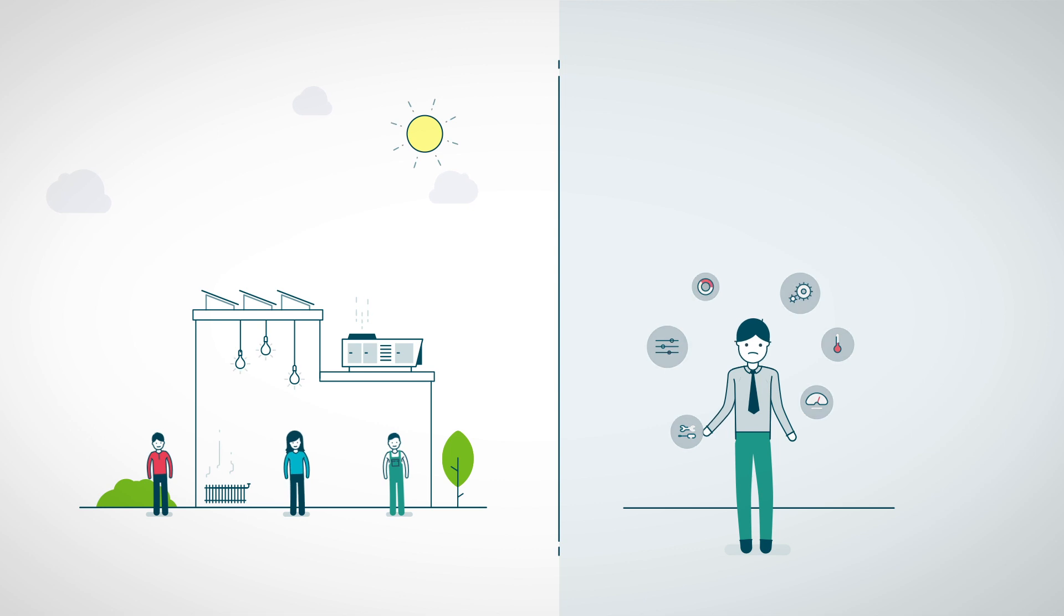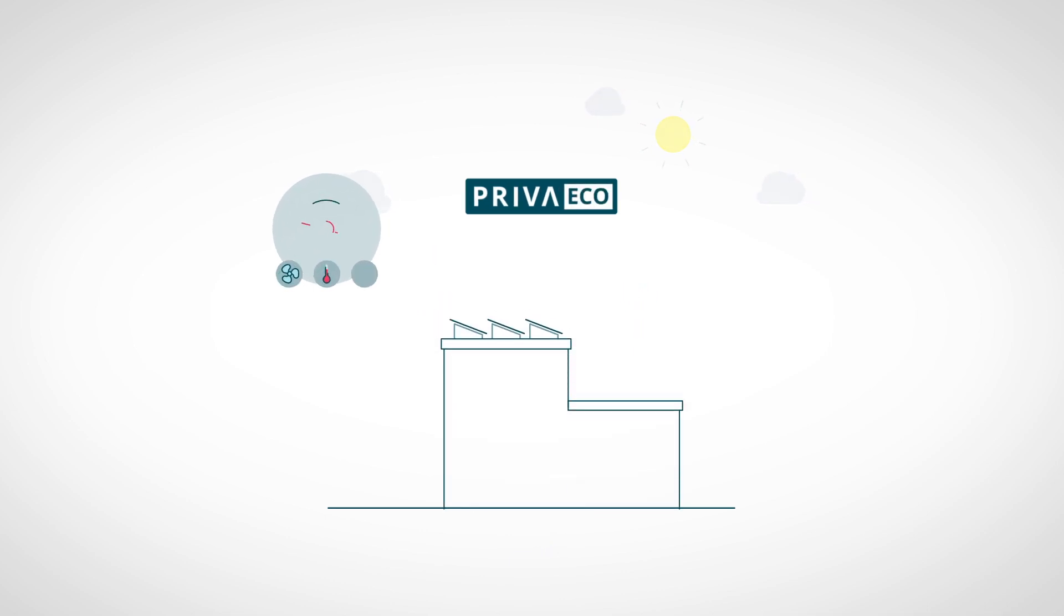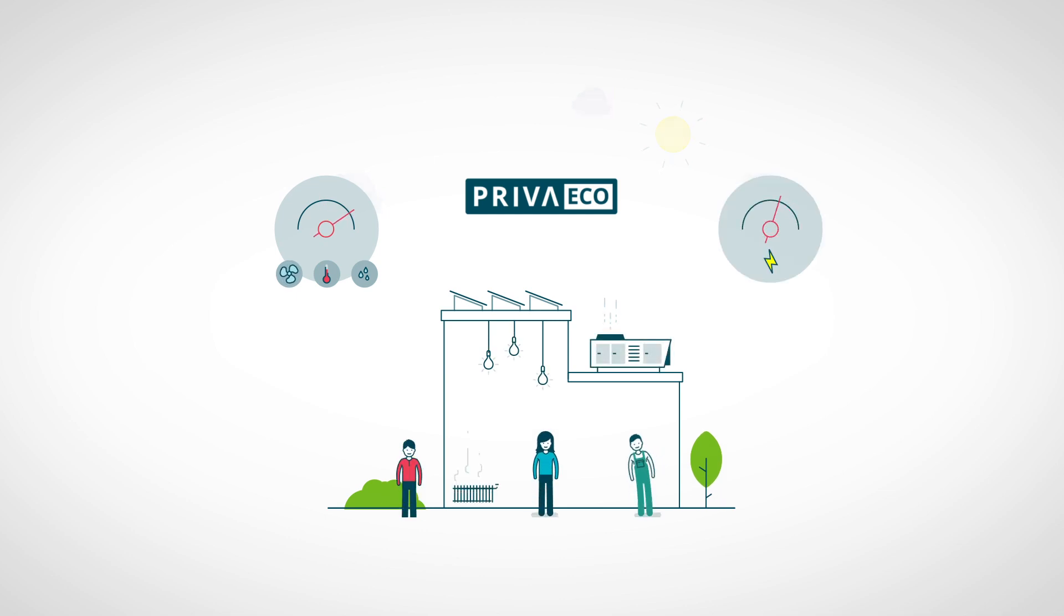What you need is a system that unburdens you by automatically improving comfort while reducing the energy consumption. Our self-learning software PrivaEco offers just that. PrivaEco optimizes climate conditions while making your building more energy efficient.